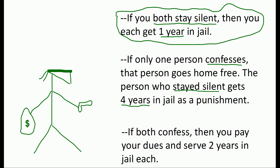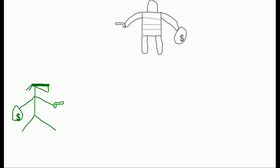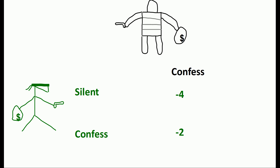So you need to think about this more logically. You imagine your decision relative to your partner's decision. Let's say that your partner confesses. You can either stay silent or confess as well. If you stay silent, you'll serve four years in jail. If you confess, however, you'll only have to serve two years. So if your partner confesses, it's in your interest to confess as well.